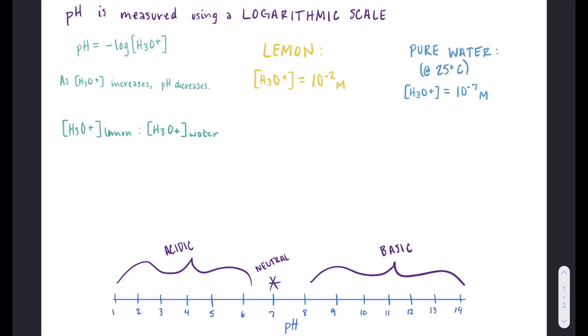We calculate the pH by taking the negative log of the concentration of hydronium ions in solution. Because of this mathematical relationship, as the concentration of hydronium ions increase, the pH will decrease.